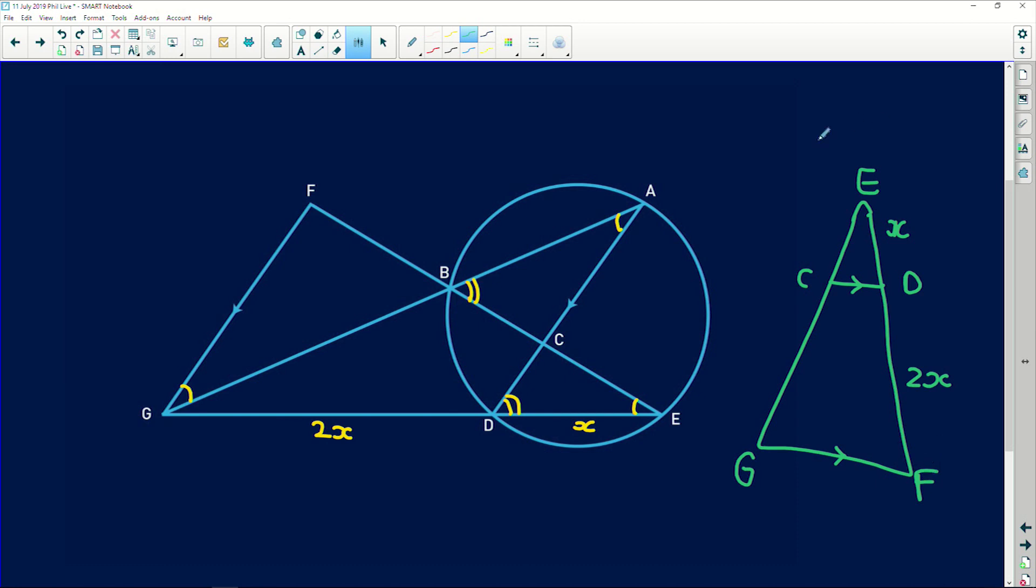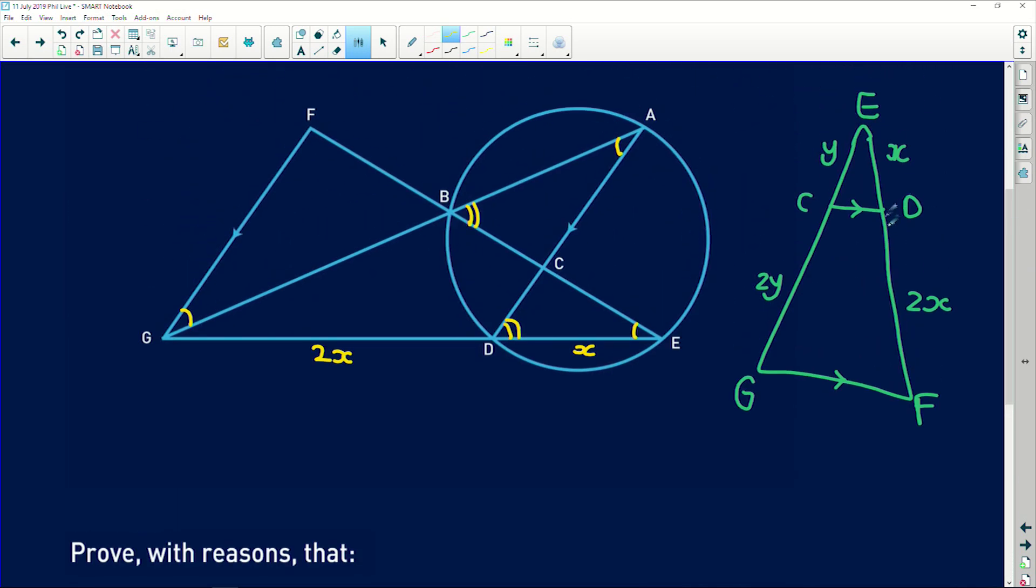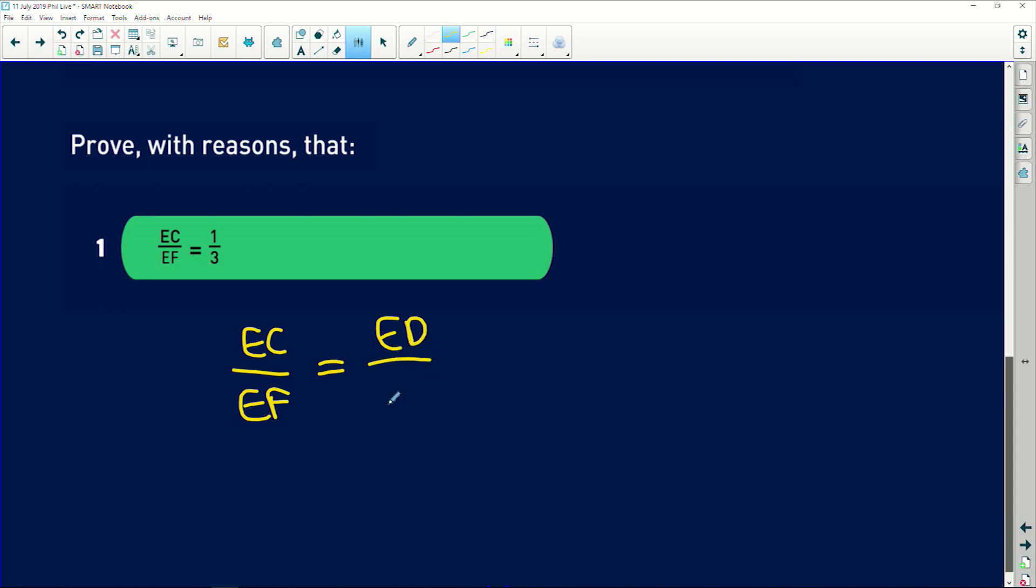Remember, the ratio is 1 to 2. Now, immediately, you should see line parallel to another side of the triangle means that it divides it in proportion. So we'll have 1 here and 2 there. It's exactly the same proportion. Same thing that we just proved in the previous question. So if we look down here, we can say that EC over EF is equal to ED over EG. And why is that? Line parallel to one side of the triangle.